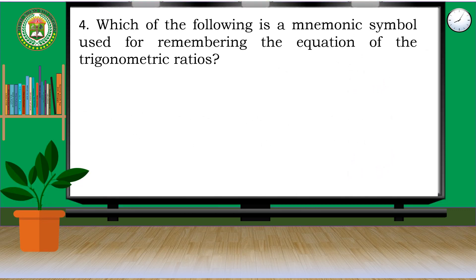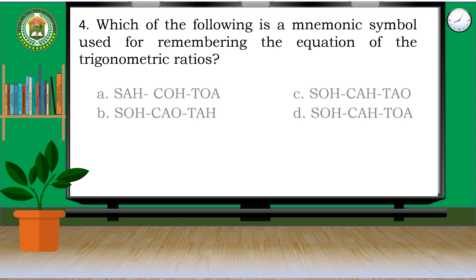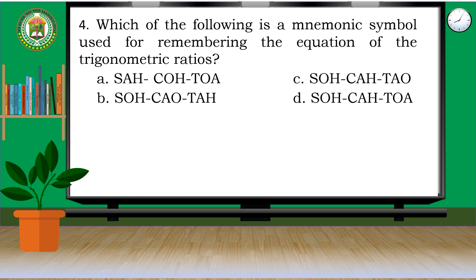Number 4. Which of the following is a mnemonic symbol used for remembering the equation of the trigonometric ratios? Is it A, sa-ko-to-wa? B, so-ka-o-ta? C, so-ka-tao? Or D, so-ka-to-wa? If your answer is D, it's correct!